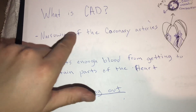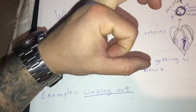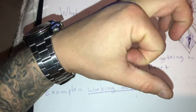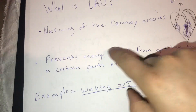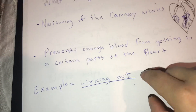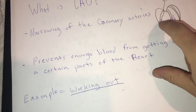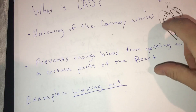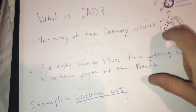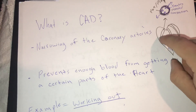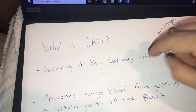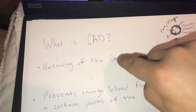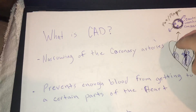With CAD, there's a narrowing inside the tubes that feed blood — the vessels — becoming narrower and smaller. If that happens, it sometimes prevents enough blood from getting to a part of the heart. Nitroglycerin will help blow it up or dilate it. It's a vasodilator, so it's going to expand the artery to allow blood to get to that part.